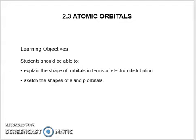2.3 Atomic orbitals. The learning objectives for this topic are: students should be able to explain the shape of orbitals in terms of electron distribution and sketch the shapes of s and p orbitals.